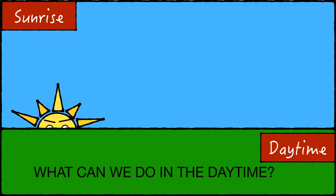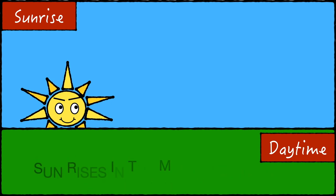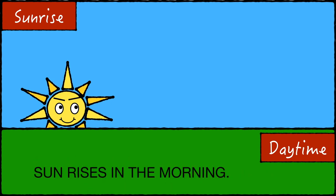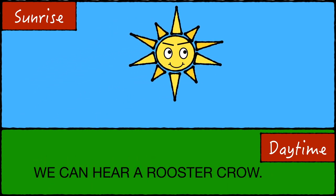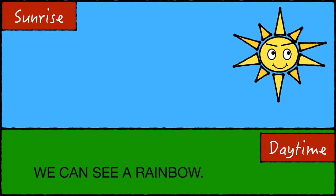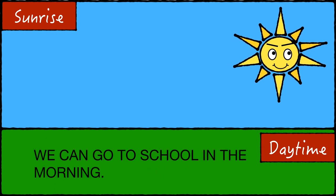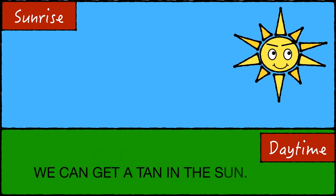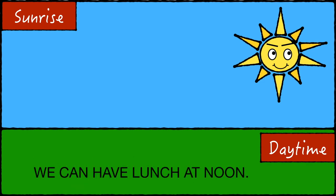What can we do in the daytime? The sun rises in the morning. We can hear a rooster crow, we can see a rainbow, we can go to school in the morning, we can get a tan in the sun, and we can have lunch at noon.